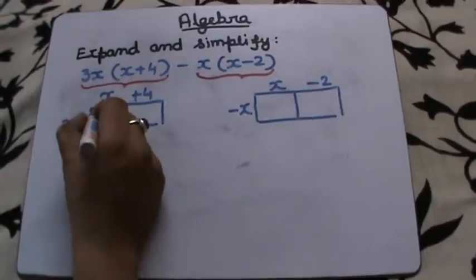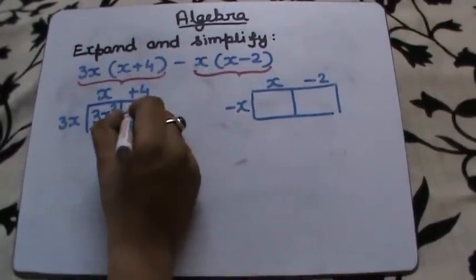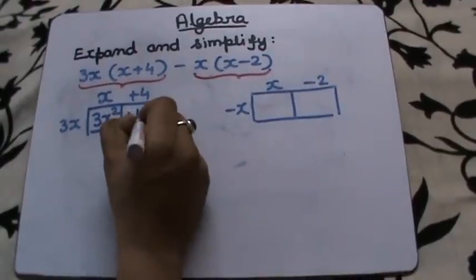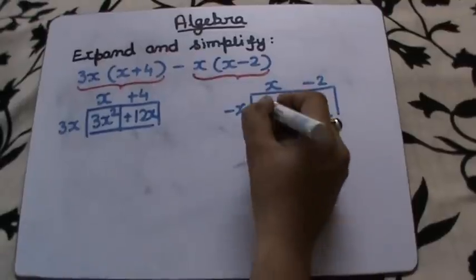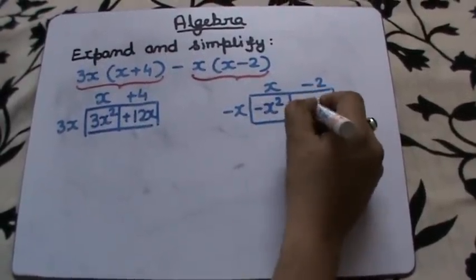So let's multiply. We get 3x² and here positive 12x, and here it will be negative x² and positive 2x.